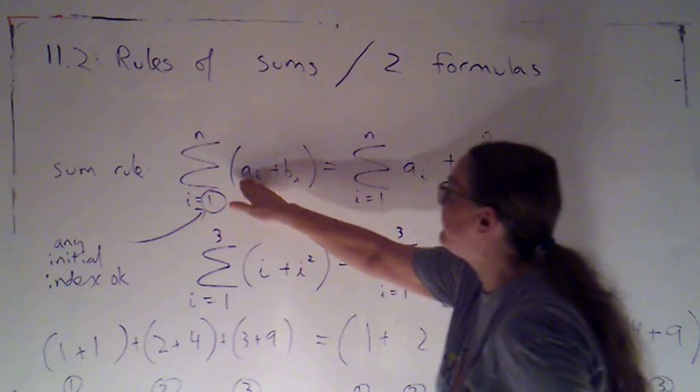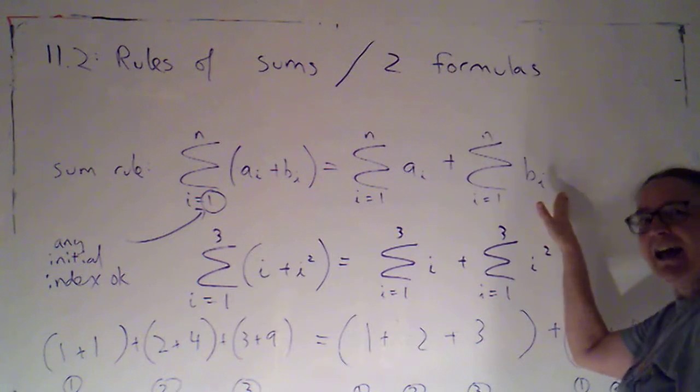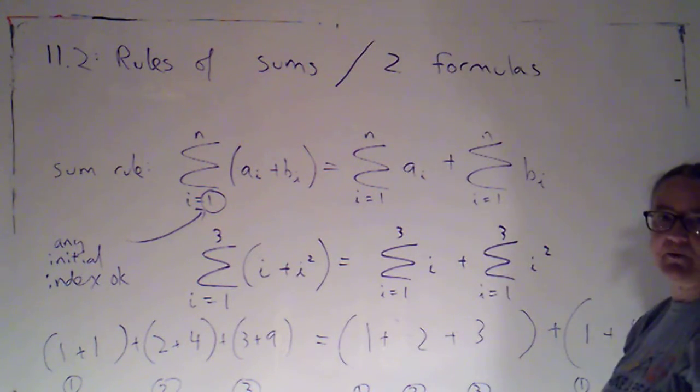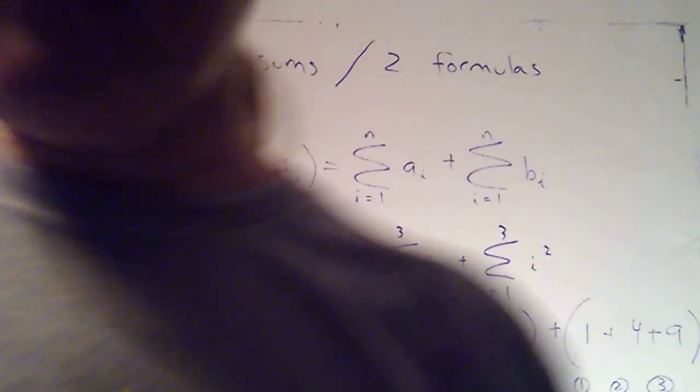So if the terms have two parts, you can break it up. You can add up all the A parts, add up all the B parts, and then add the results. That's our first rule.